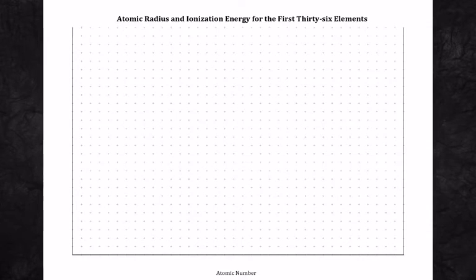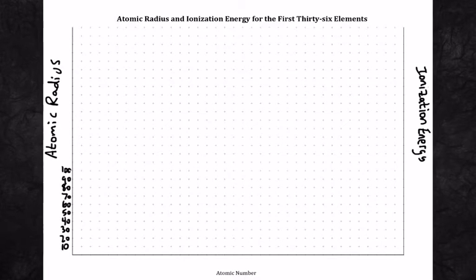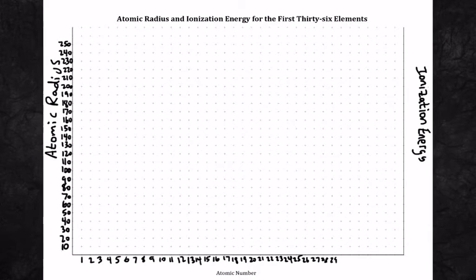Here is what our graph paper looks like. Let's label all of our axes. I'm going to write atomic radius on the left y-axis, and ionization energy on the right y-axis. Note on the bottom, it's already labeled atomic number. We're going to count by tens on the left y-axis, going from 10 all the way up to 250. On the x-axis is the atomic number. There's 36 lines, so let's count 1 through 36. Those numbers represent each of the elements. Now we're going to label those numbers for ionization energy on the right y-axis, counting by ones all the way up to 25.